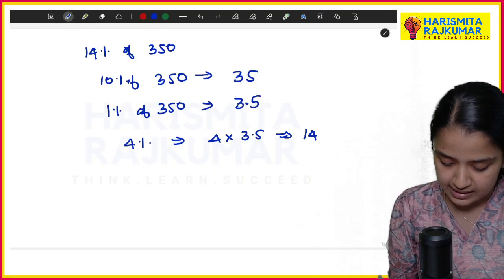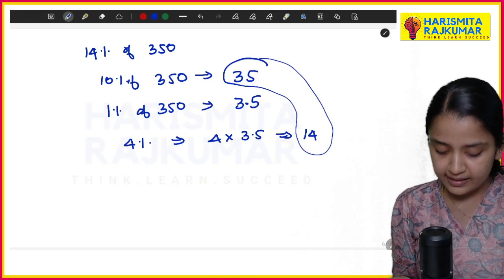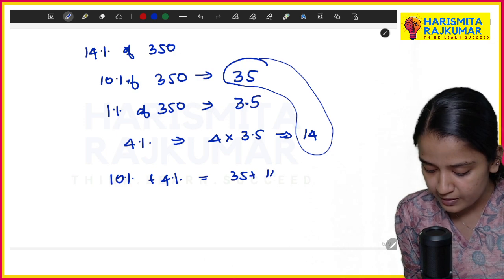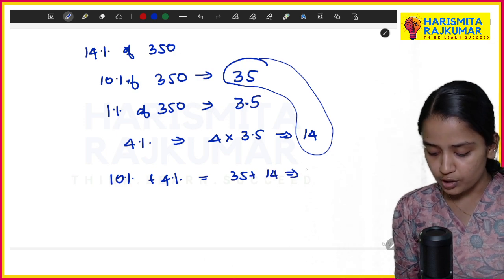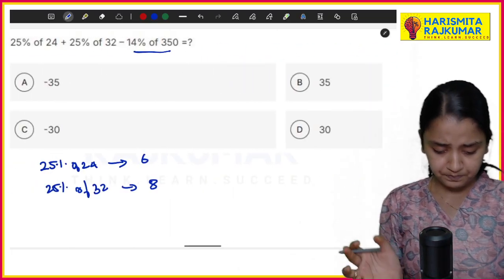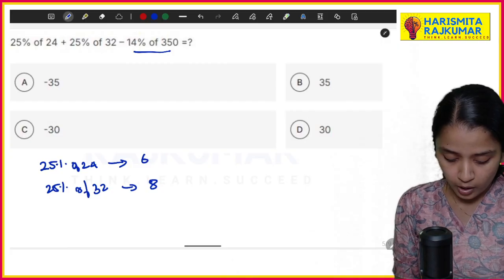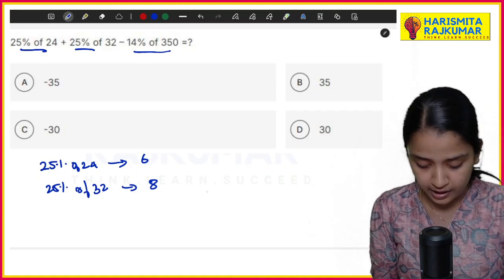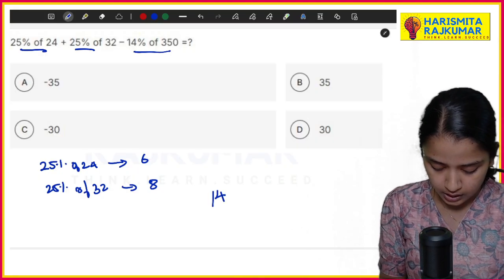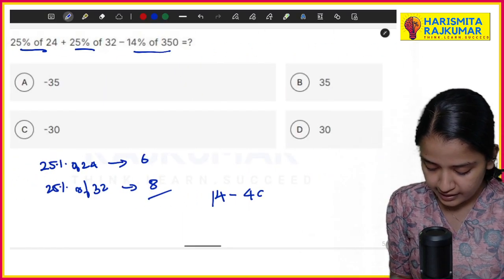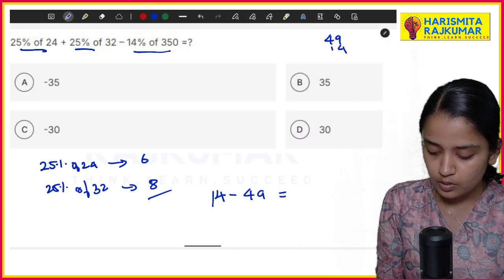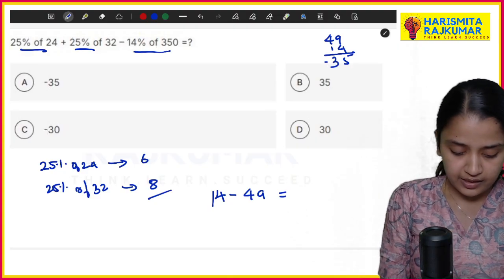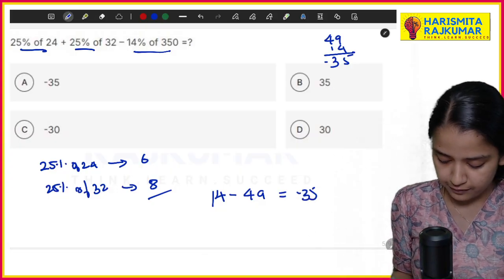So when you add all these things, you will be getting the answer. 10% + 4% will be 35 + 14, so you will get 49. The question is you have to add these and subtract. 8 + 6 is 14. So again 14 here. 14 - 49, the answer you are getting is -35. So -35 is my answer when I do it. I hope you understood it clearly.